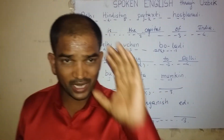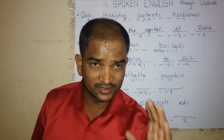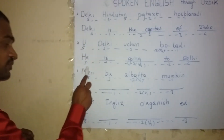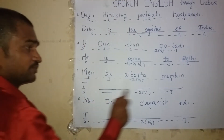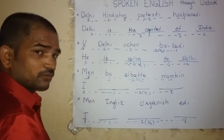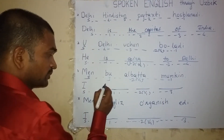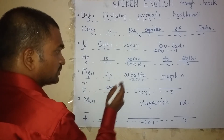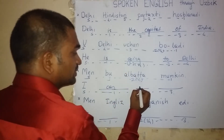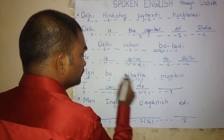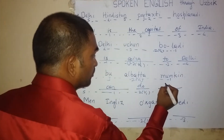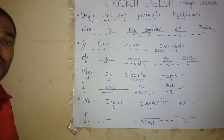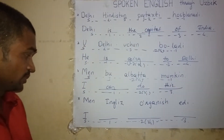Now pause the video and try yourself. Start. The word for 'men' — I. The word for 'mumkin' — can. The word for 'albatta' — do. The word for 'bu' — this. I can do this.